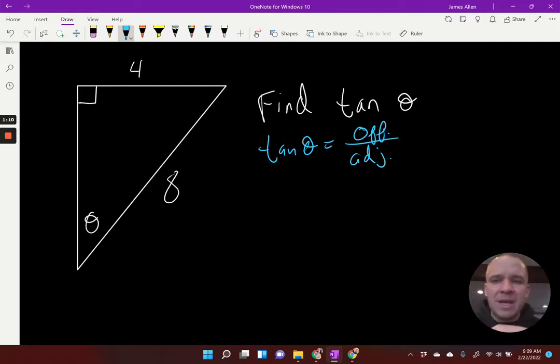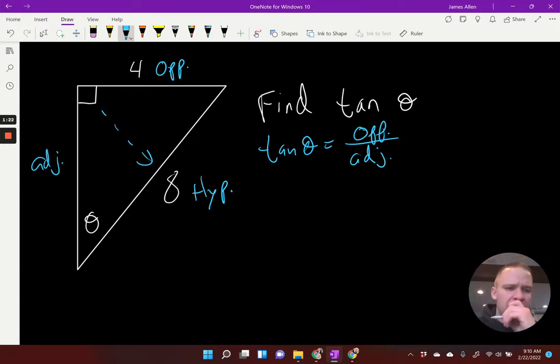Well, it looks to me like I've got my opposite side, but over here, this is my hypotenuse because it's across from the right angle. Okay. So I got to figure out my adjacent side. I don't know my adjacent side. How would I do that?